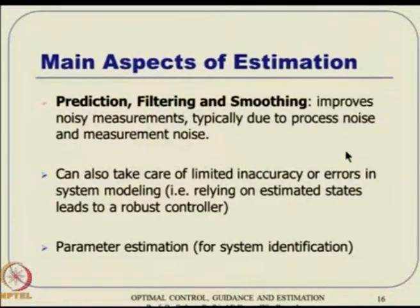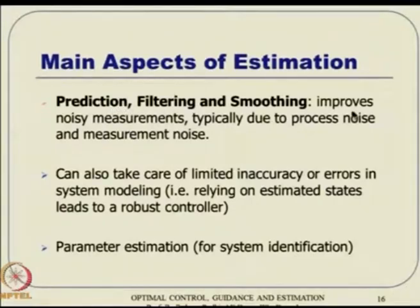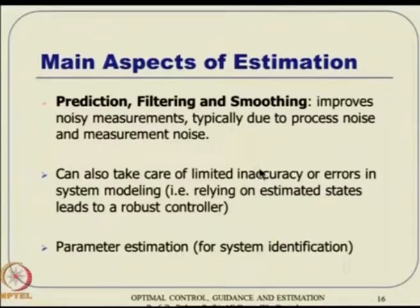Moving on to Kalman filter ideas, which are an extension of these ideas. We will need some random variable concepts, which we are going to discuss subsequently. Let us see a brief overview of what the Kalman filter is about. The main aspects of estimation are: prediction, filtering, and smoothing. Prediction is what is going to happen in the future; filtering is what is happening right now; and smoothing is what happened before.